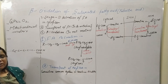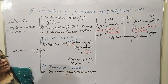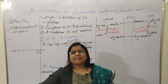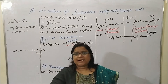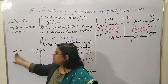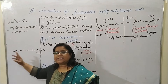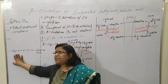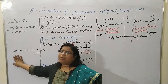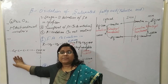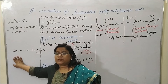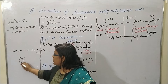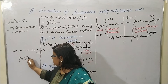Fatty acids are of two types: first is saturated, and second is unsaturated. Saturated fatty acid contains only single bonds in the carbon chain. But if the carbon chain contains double bonds or triple bonds, it comes under the category of unsaturated fatty acid — also called PUFA, polyunsaturated fatty acid.